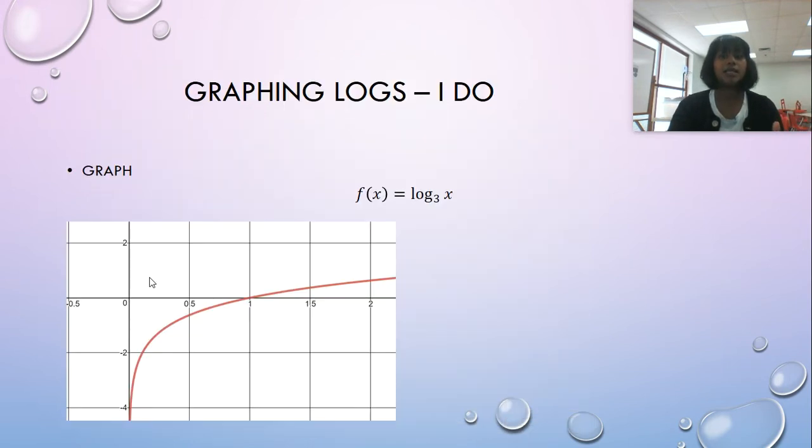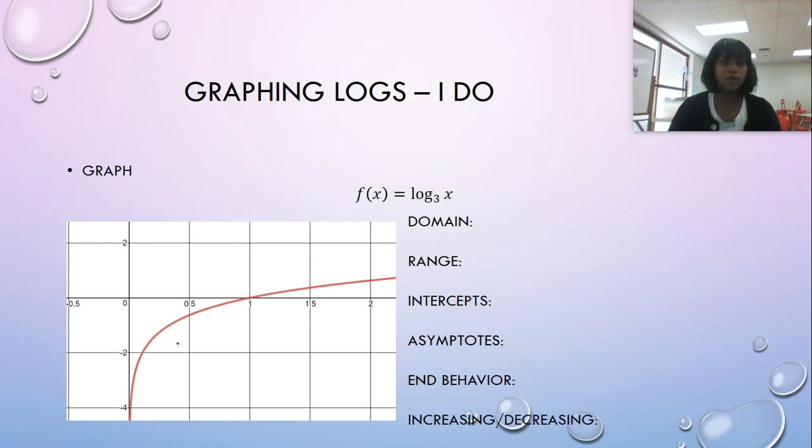Now I can access all of my information about domain, range, intercepts, asymptotes and behavior, and increasing or decreasing. So my domain does not go from negative infinity to positive infinity. It goes from zero to positive infinity. My range, on the other hand, goes from negative infinity to positive infinity.